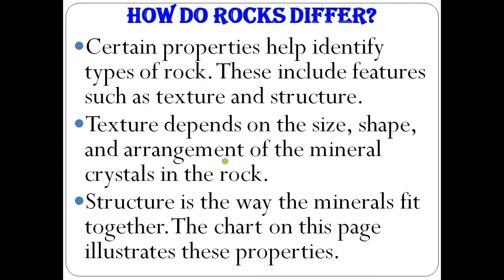Furthermore, we can see how do rocks differ. Certain properties help to identify the types of rocks. This includes features such as textures and structures. Texture particularly depends on the size, shape, and arrangement of the mineral crystals in the rock. Structure is the way the minerals fit together.